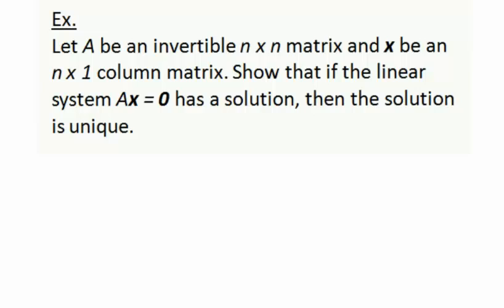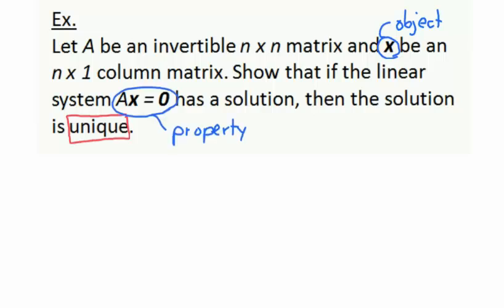In our second example, we have an n by n invertible matrix A and an n by 1 column matrix x. We want to show that if the linear system A times x equals 0 — where 0 is the n by 1 zero matrix — has a solution, then that solution is unique. The word 'unique' signals we should identify the special object and its property.